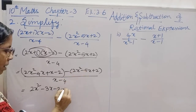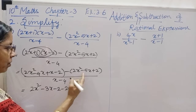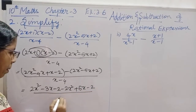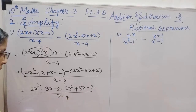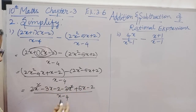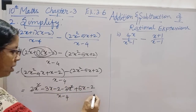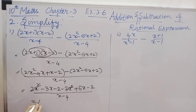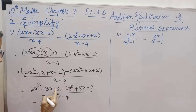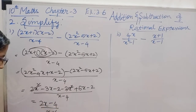Plus 2x squared minus 2x squared, minus 5x plus 5x plus 2 minus 2, the whole divided by x minus 4. So, 5x minus 3x is plus 2x, minus 2 minus 4, divided by x minus 4.